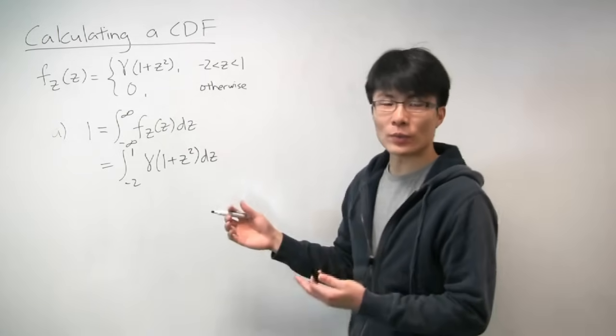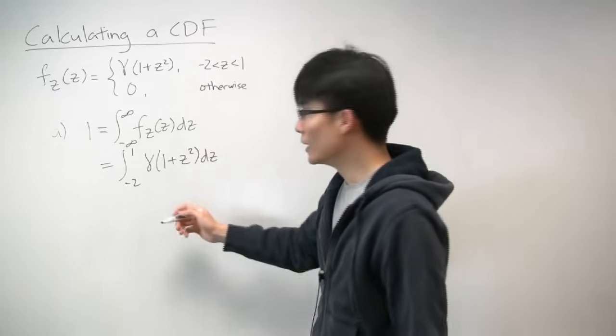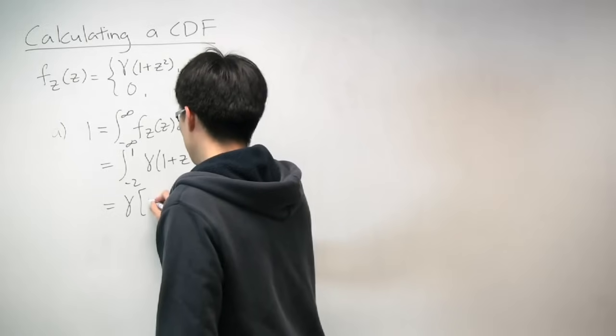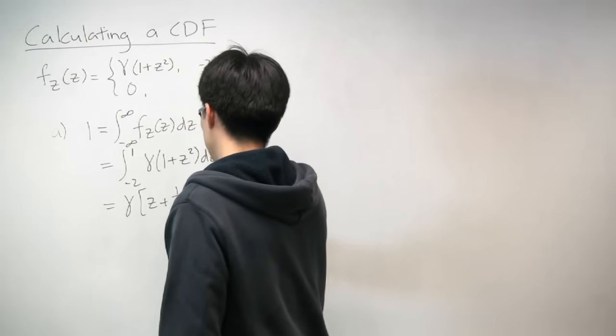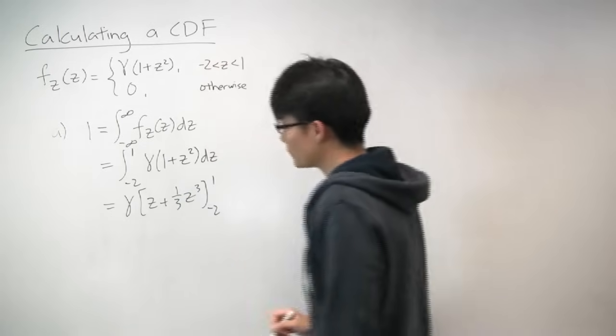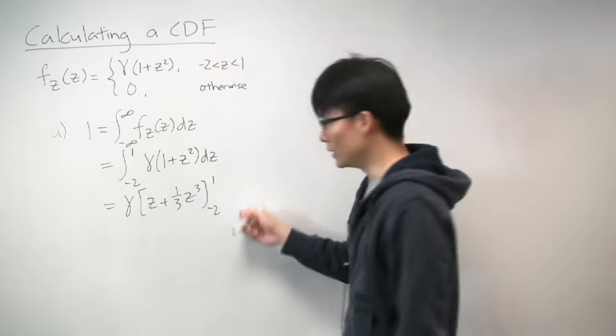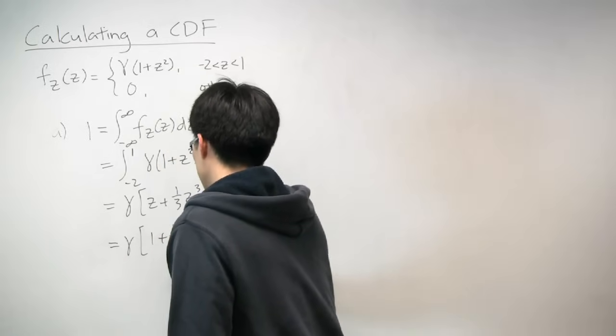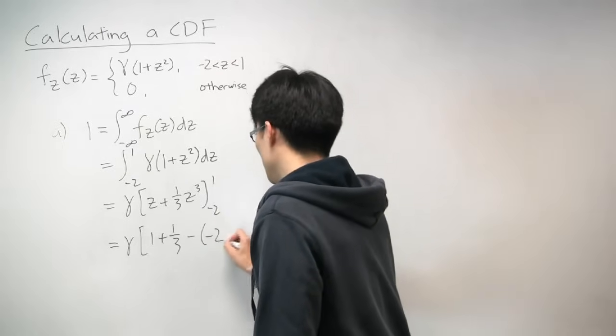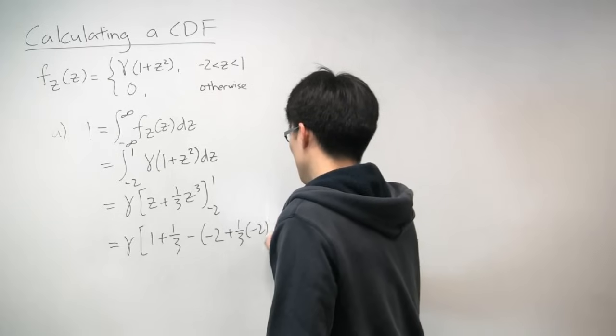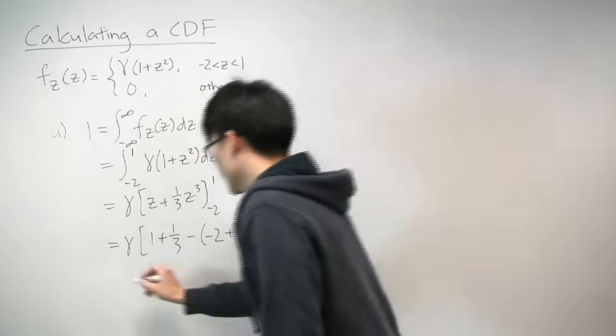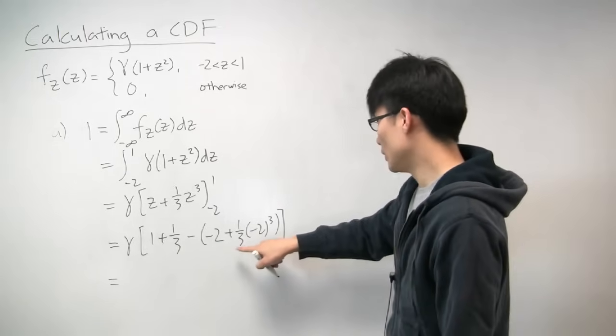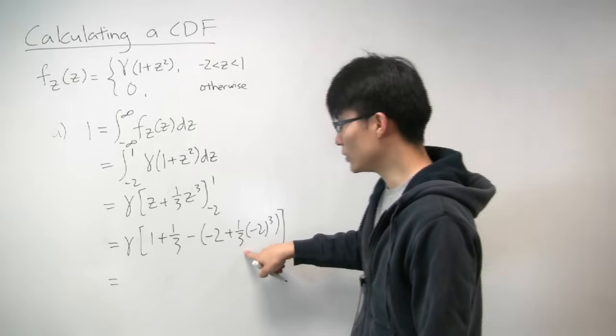All right, and now the rest of the problem is just applying calculus and integrating this. So let's just go through that process. So we get z plus 1/3 z cubed from minus 2 to 1. And then we'll plug in the limits, and we get gamma, and that's 1 plus 1/3 minus (minus 2 plus 1/3 times minus 2 cubed). All right, and then if we add this all up, you get 4/3 plus 2 plus 8/3, which will give you 6.